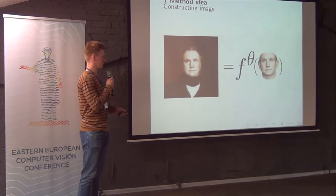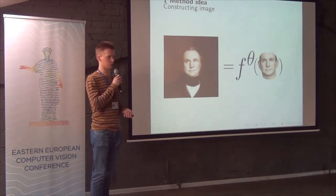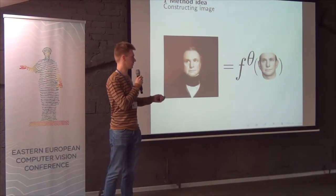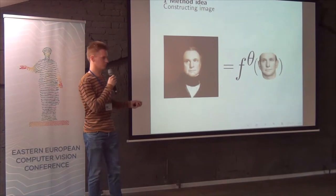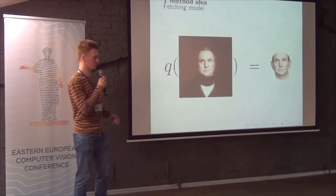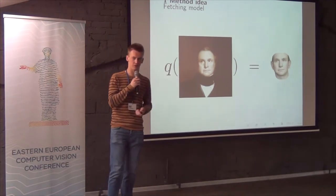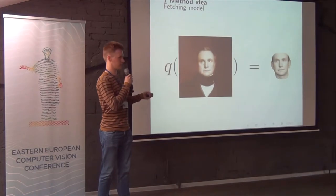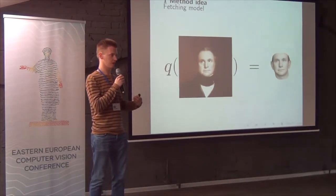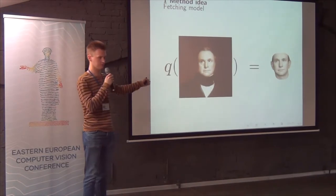The core idea of the method is that we can construct the image from a face model. We need a function which can convert a face mesh and its parameters theta into an image. It sounds pretty simple, but the task is to find the inverse function of rendering. That's why this method is sometimes called inverse rendering of a face from an image. We will call this function Q — it takes an image as input and returns a 3D model of the face displayed in that image.